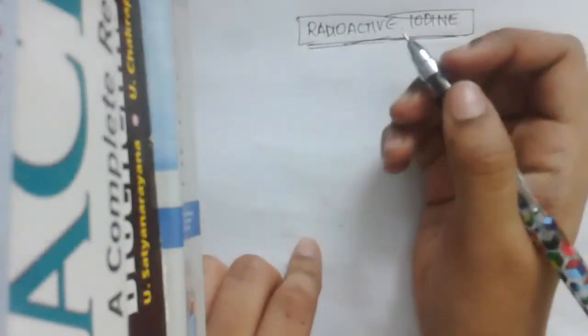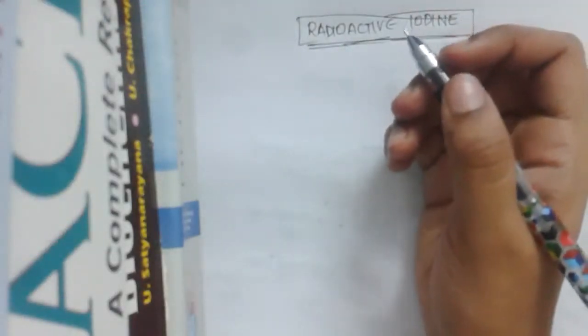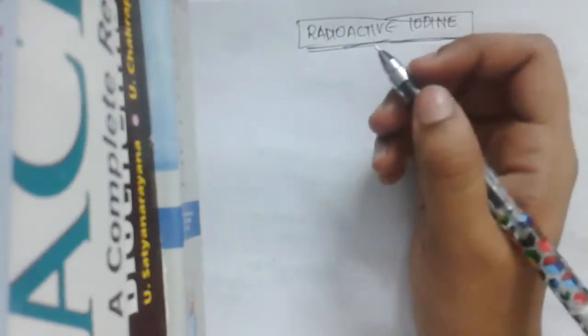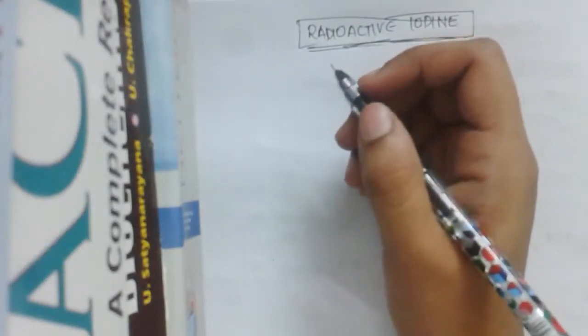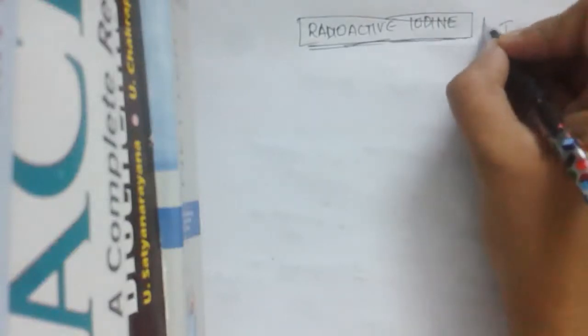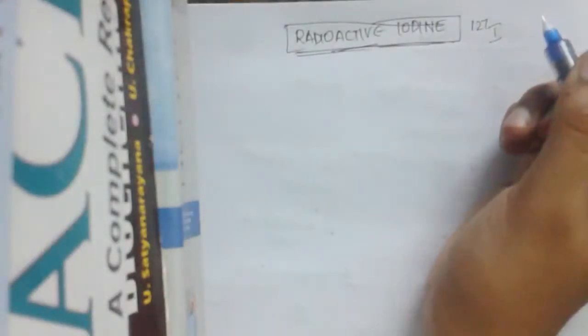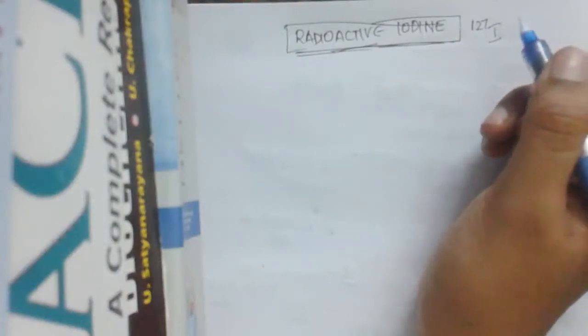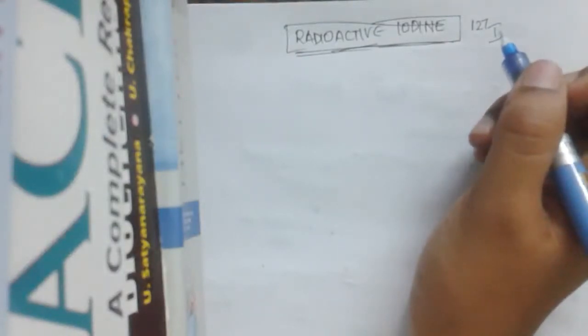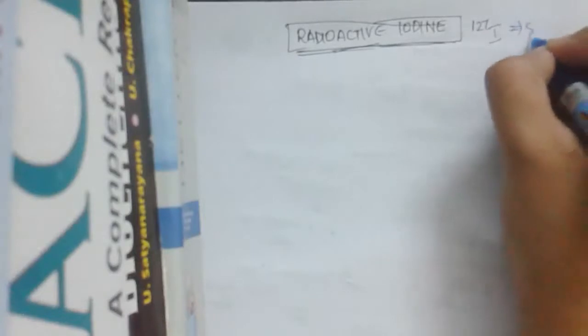So first let us learn some facts about radioactive iodine. What is basically the radioactive iodine? Radioactive iodine is iodine-127. Here, iodine-127 is the stable iodine isotope.